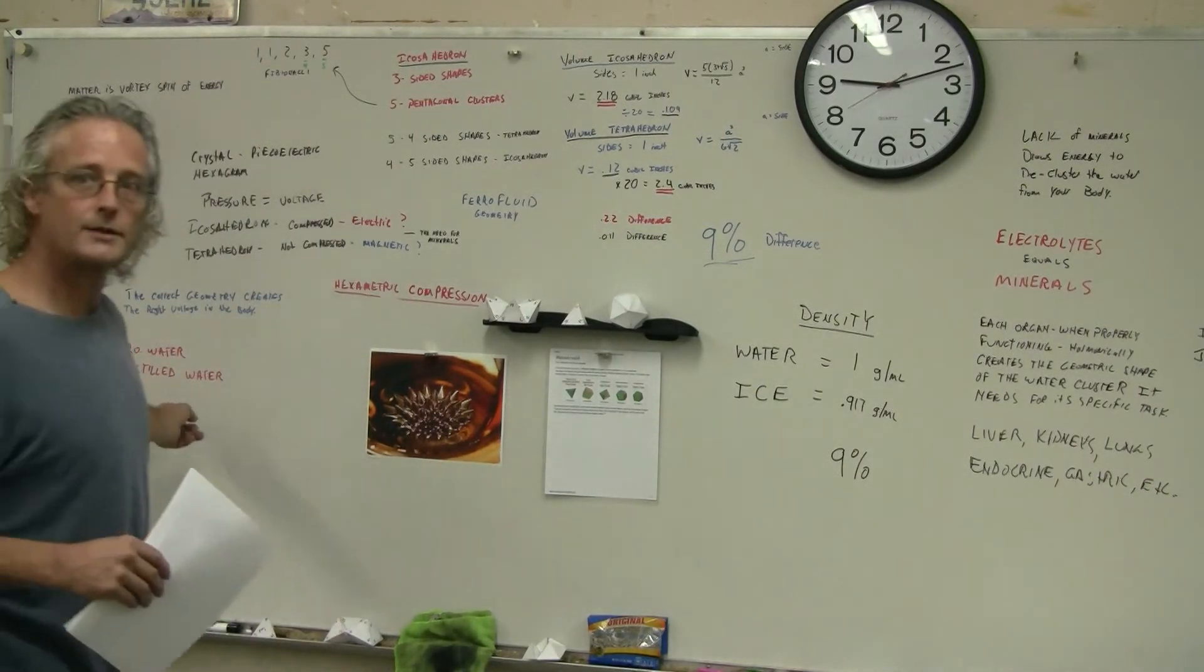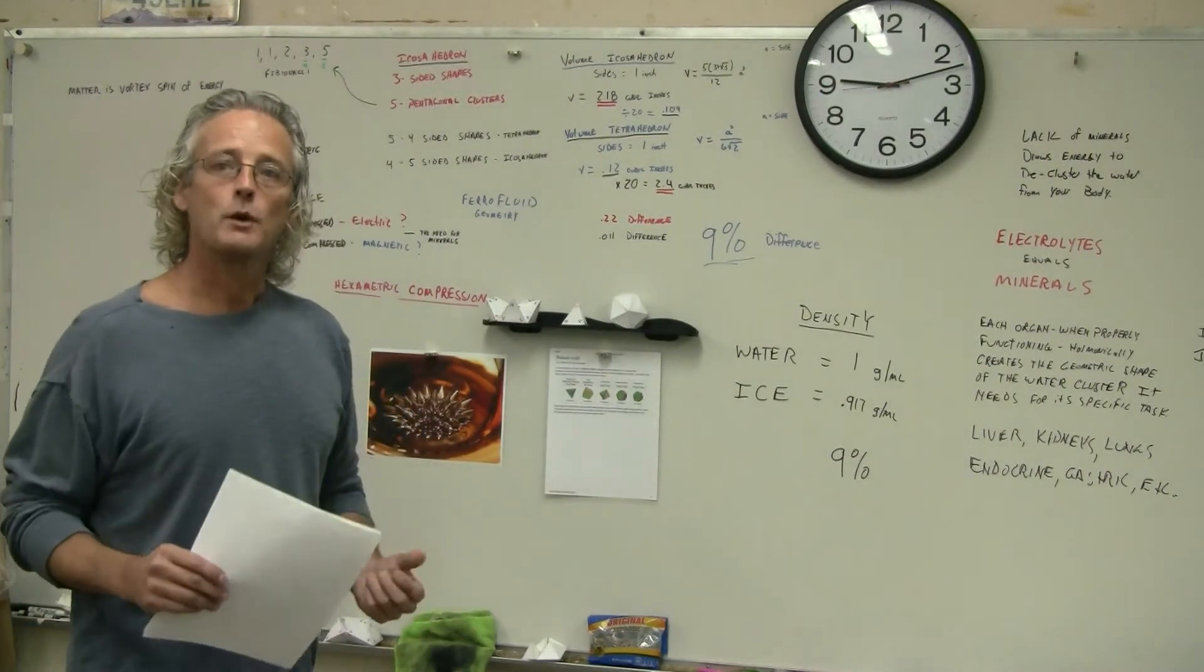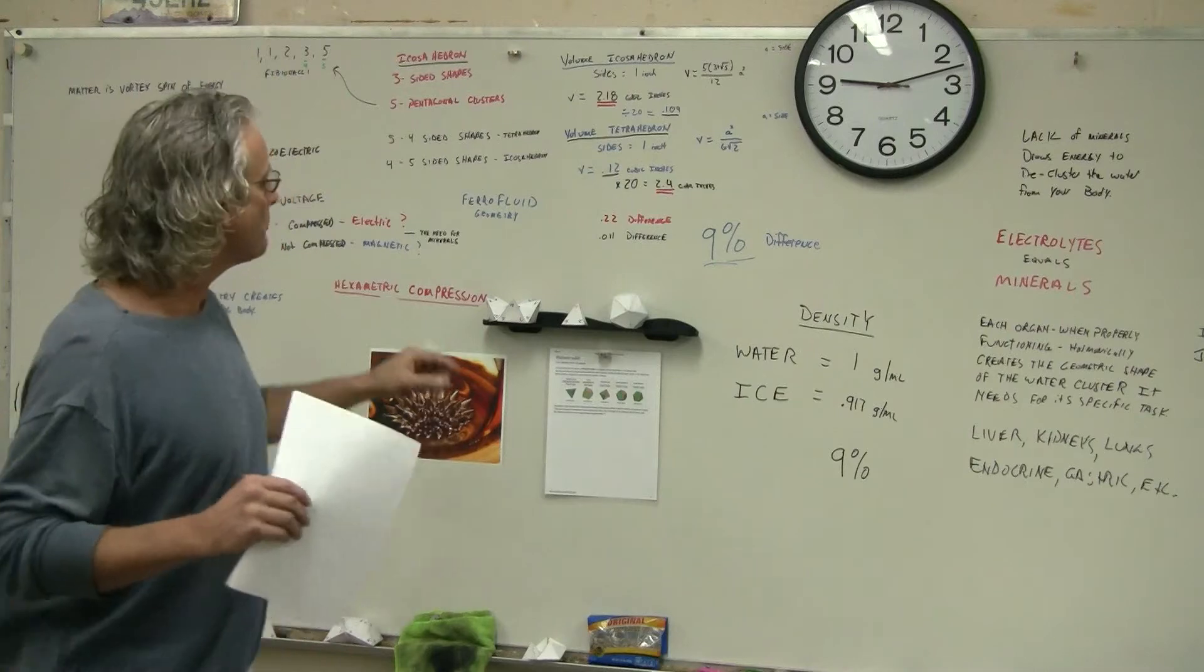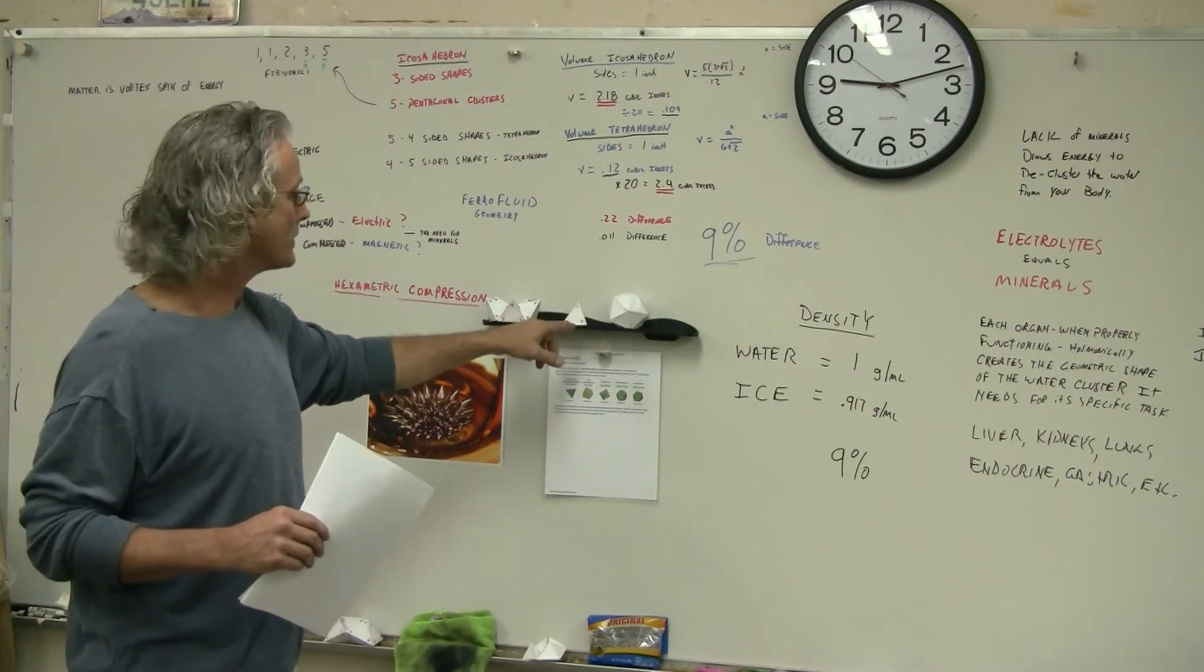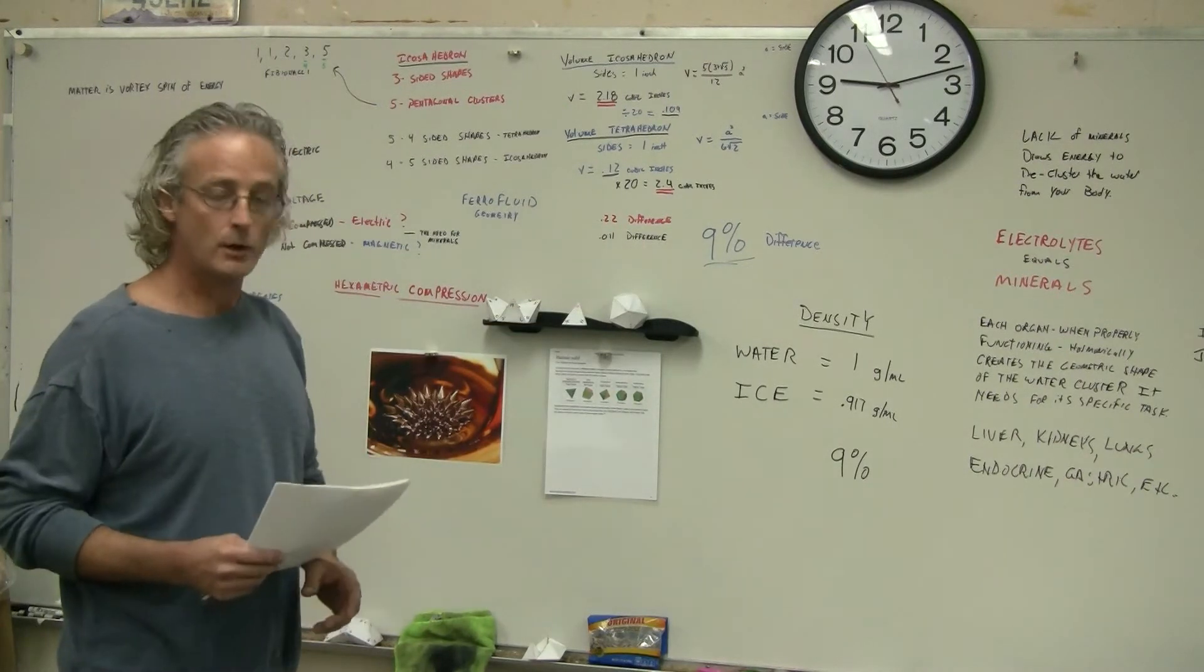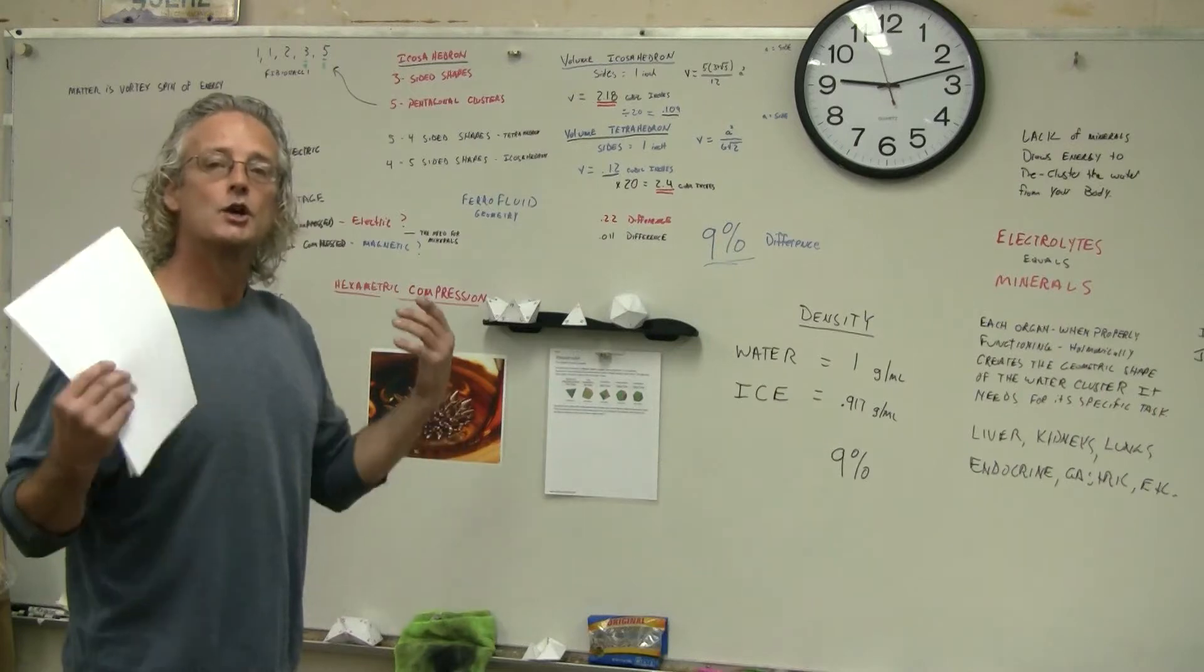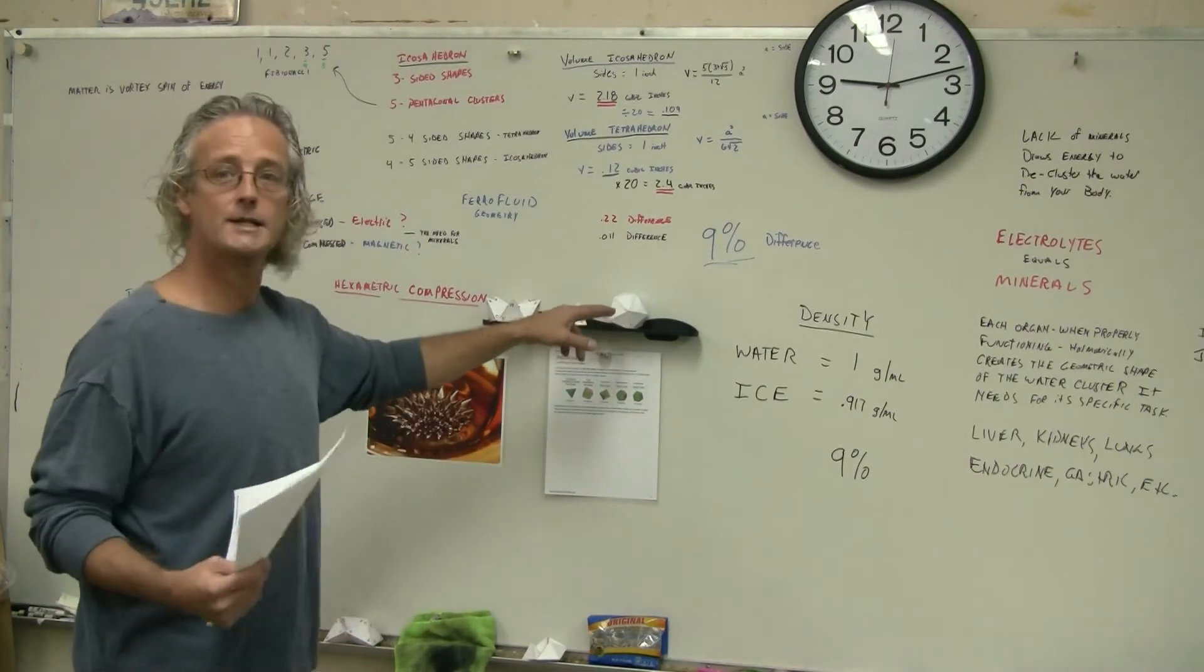RO water and distilled water have absolutely no minerals in them. When you drink this type of water, your body needs the minerals to break this cluster down. If you drink RO water or distilled water, which has essentially no minerals in it, your body has to draw minerals from itself in order to break these down.